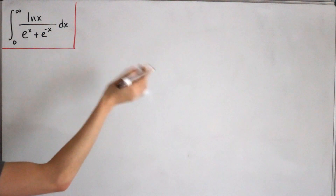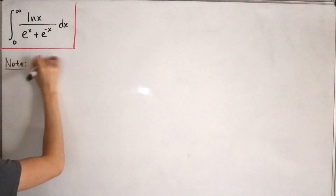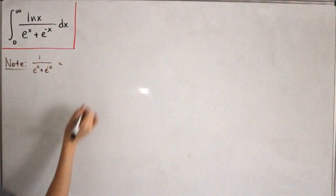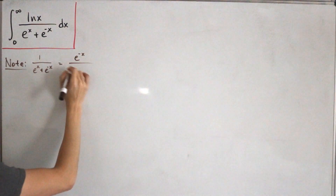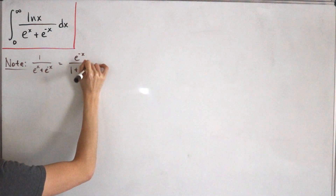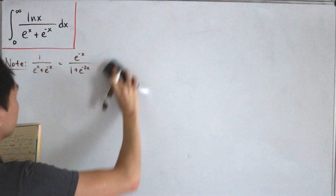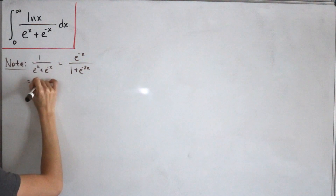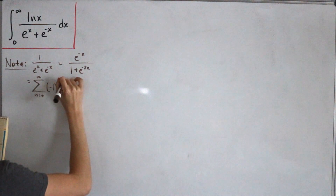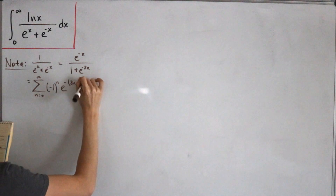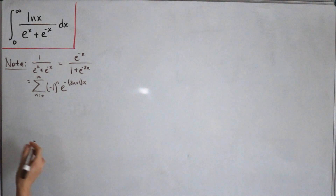Let's call this integral capital I. First, note that 1/(e^x + e^(-x)): if we multiply top and bottom by e^(-x), we get e^(-x)/(1 + e^(-2x)). This has a series representation as the infinite sum from n=0 of (-1)^n · e^(-(2n+1)x).